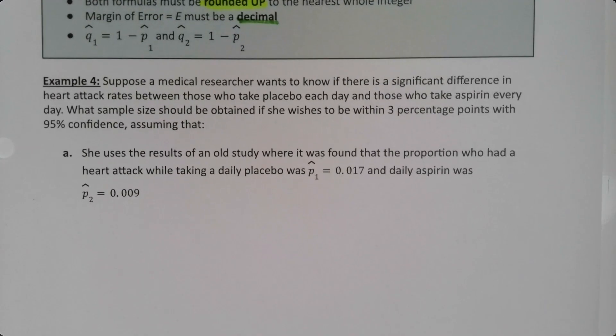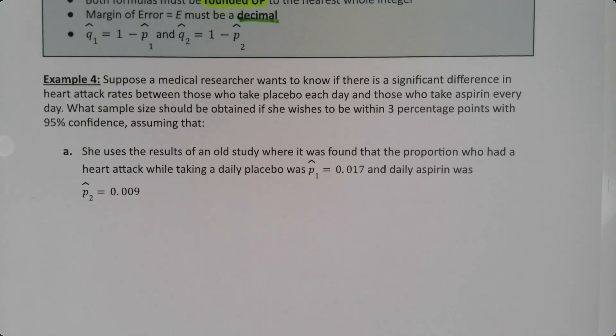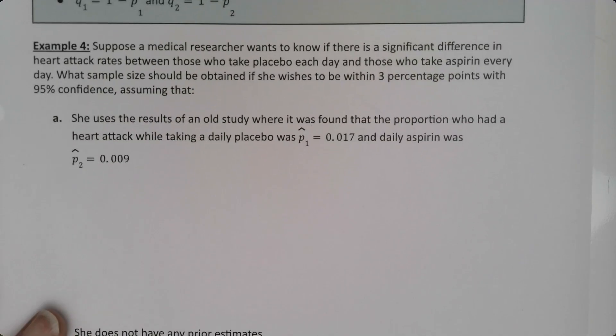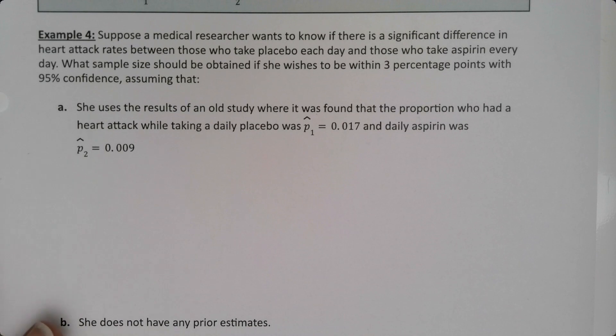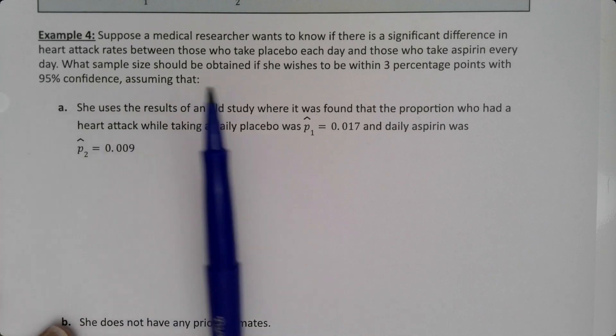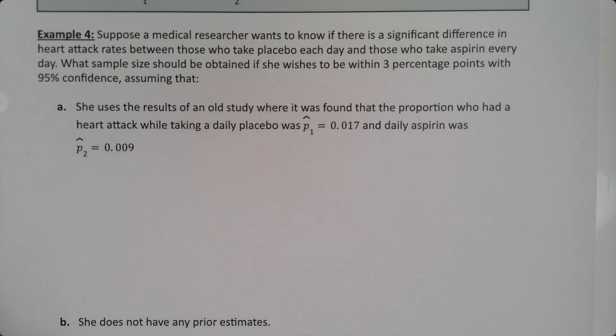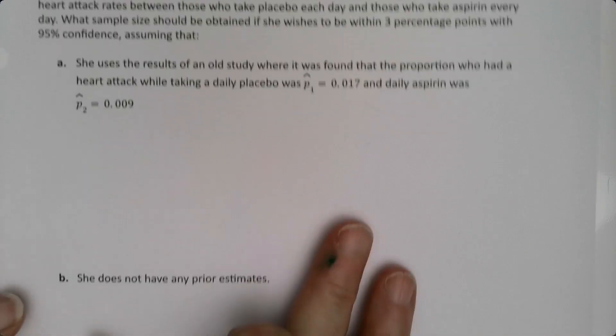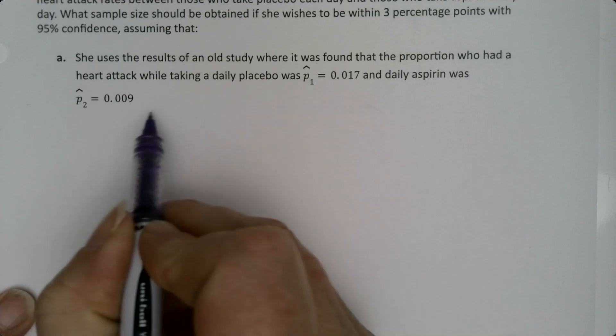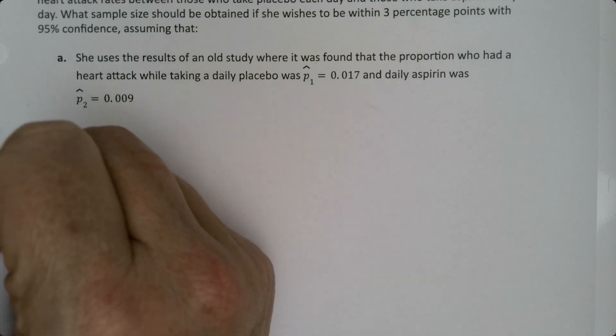Alright, so let's do an example. Suppose a medical researcher wants to know if there's a significant difference in heart attack rates between those who take placebo each day and those who take aspirin each day. What sample size should be obtained if she wishes to be within three percentage points with 95 percent confidence? Assuming she uses the old results of an old study where it was found that the proportion who had a heart attack while taking a daily placebo was P1 hat equals 0.017 and daily aspirin was P2 hat equals 0.009. Oh my goodness. Okay, so there's a lot of things going on here. For starters, I can see that I have prior estimates. I can see that I'm working with two values.